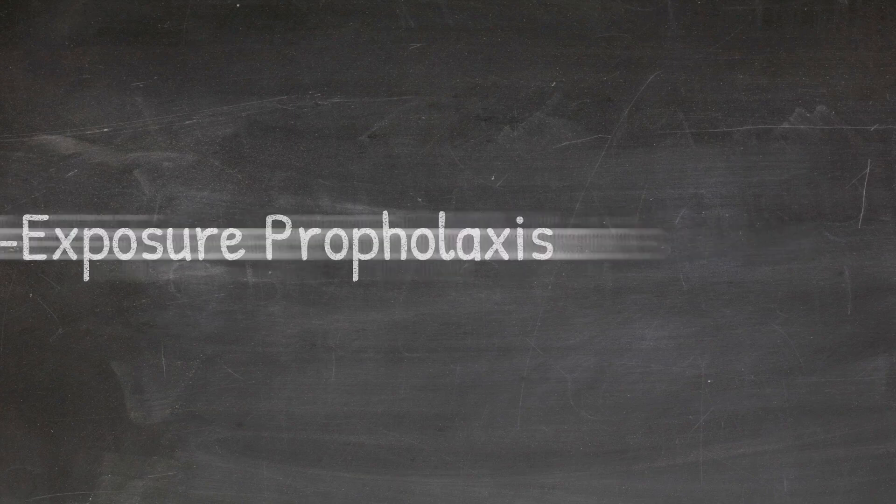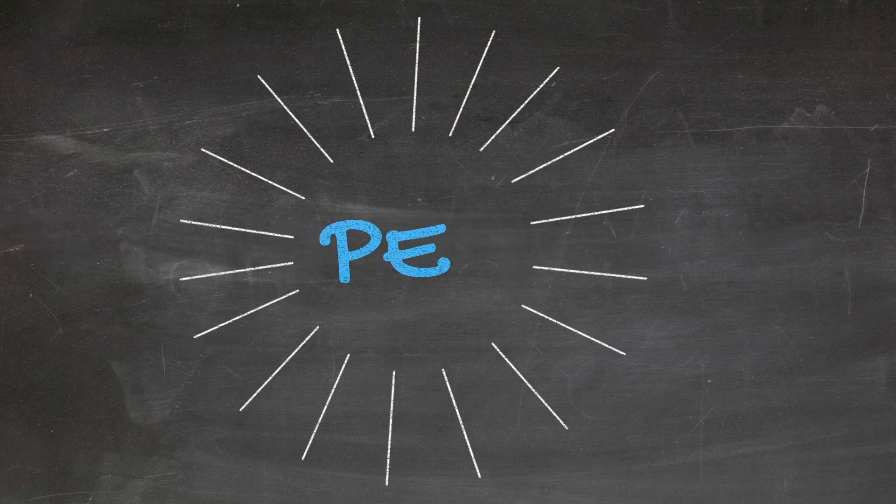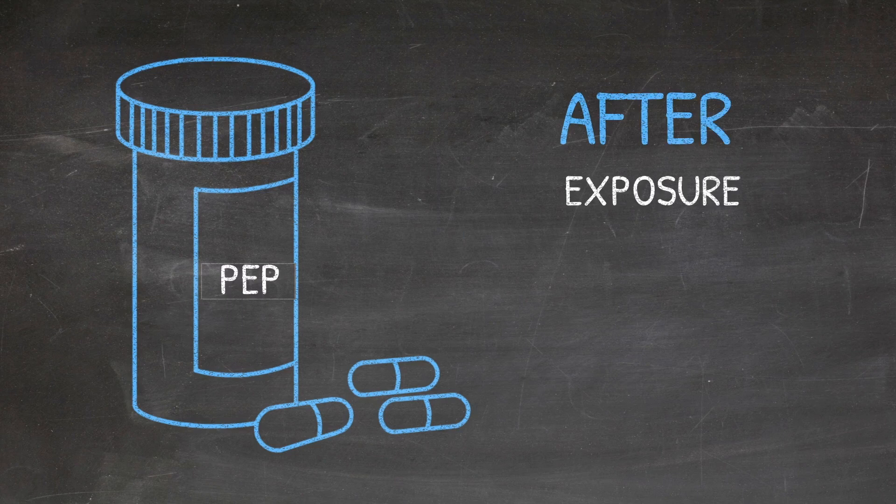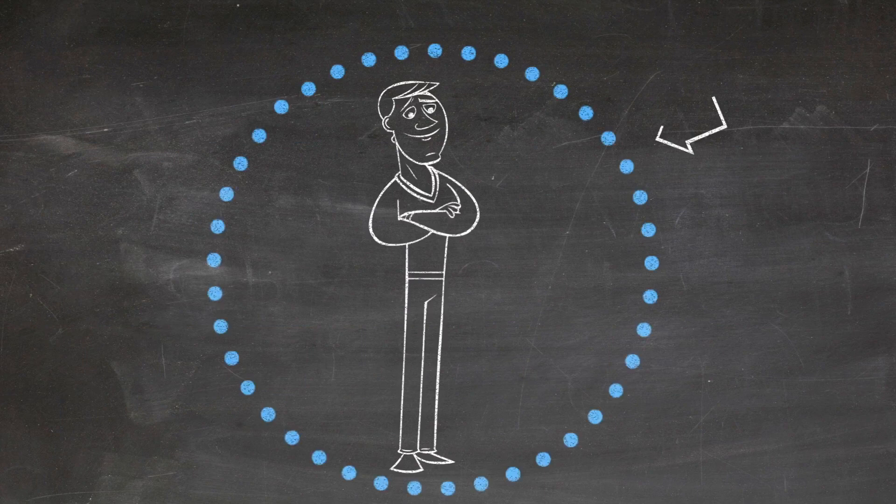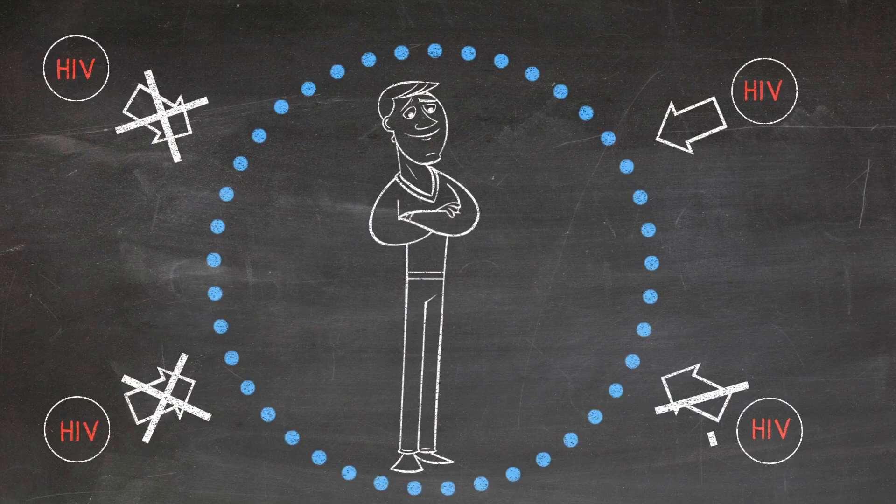PEP. Post-exposure prophylaxis, or PEP for short, is the process of taking antiretroviral medication after you've been potentially exposed to HIV to prevent a lifelong infection of the virus.